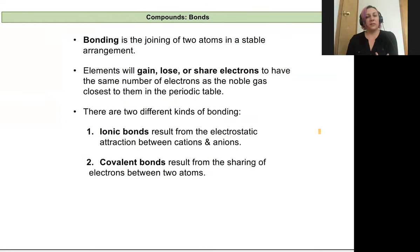When we talk about these arrangements relative to one another, we're really talking about how the atoms are bonded to one another. Bonding is the joining of two atoms in a stable arrangement. Typically, elements are either going to gain, lose, or share electrons in order to have the same number of electrons that a noble gas would. Noble gases are inert, very stable, and don't do much reacting with anything.